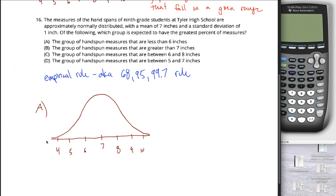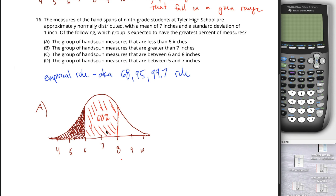Technically this distribution continues infinitely in both directions, but it gets so small you don't need to draw it. Less than 6 inches is the region shaded in brown. Since 68% of observations are between 6 and 8, the remaining 32% is not in that region. Taking advantage of symmetry, the brown area on the left equals the unshaded area on the right. If both together are 32% and they're equal, then each must be 16%. So the group with hand span measures less than 6 inches is 16%.